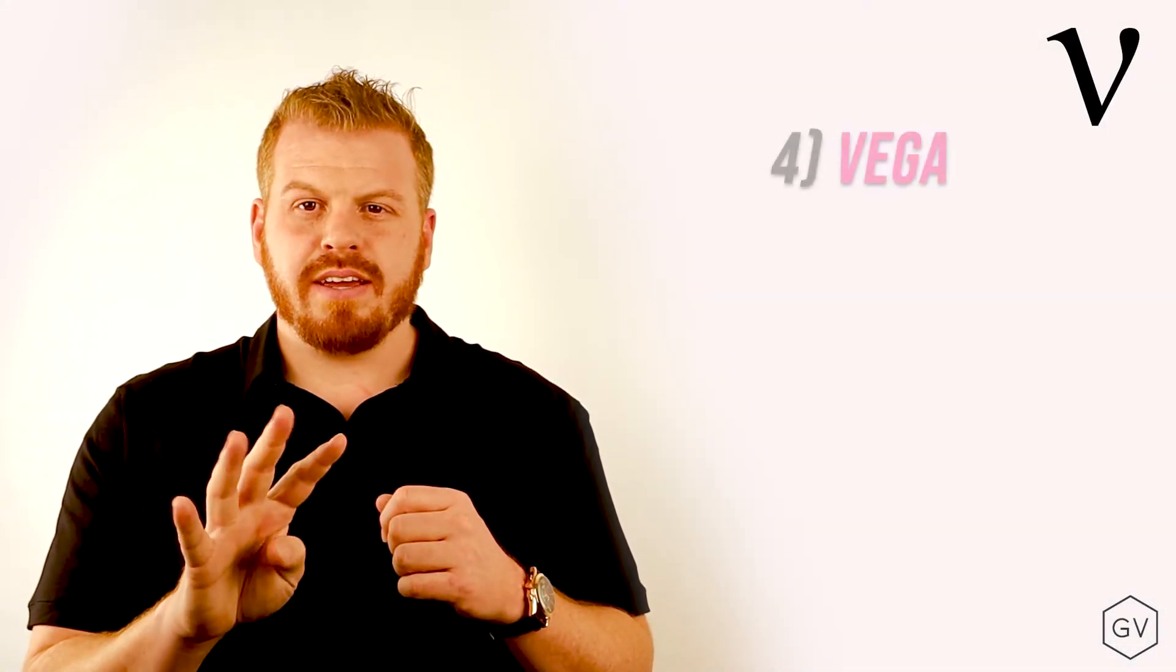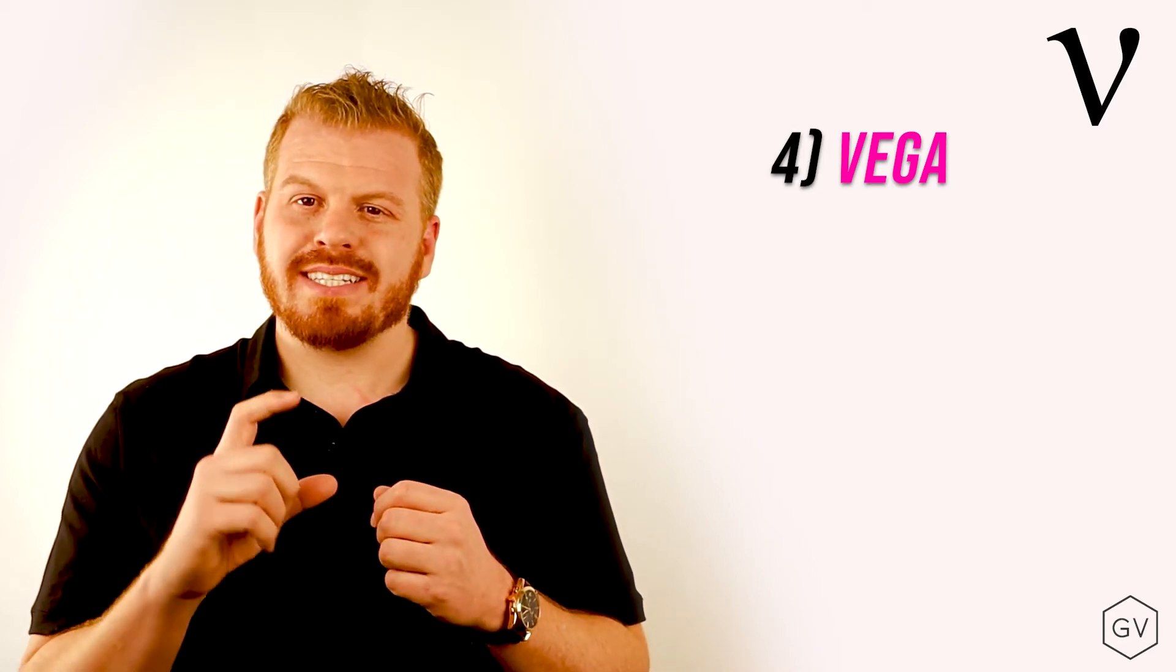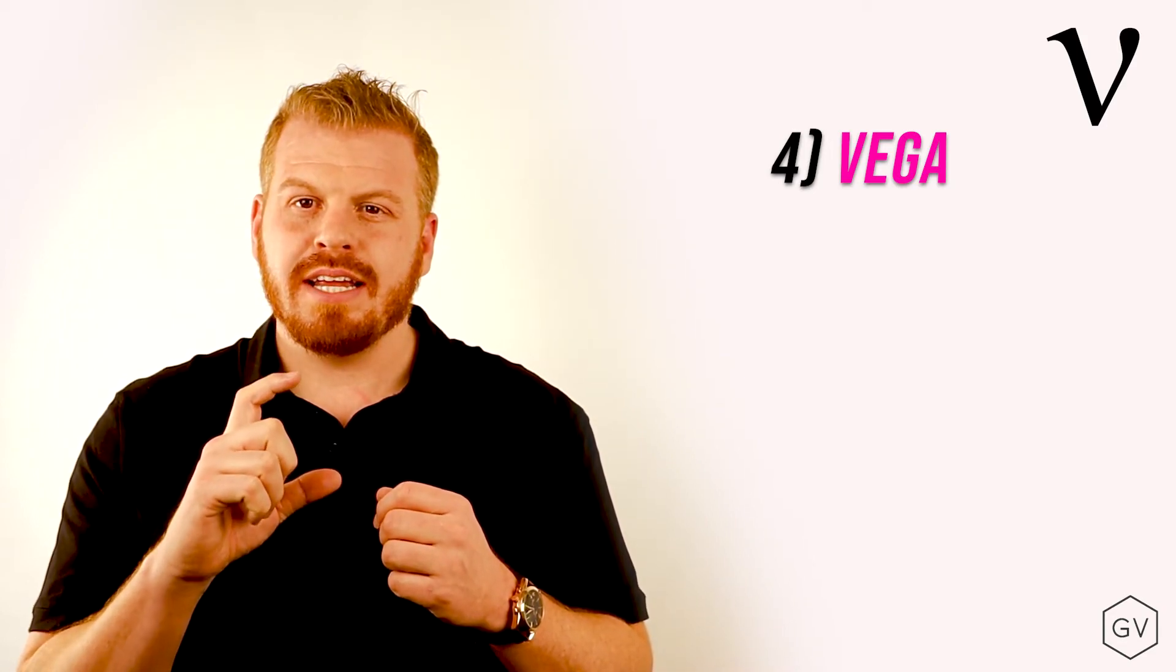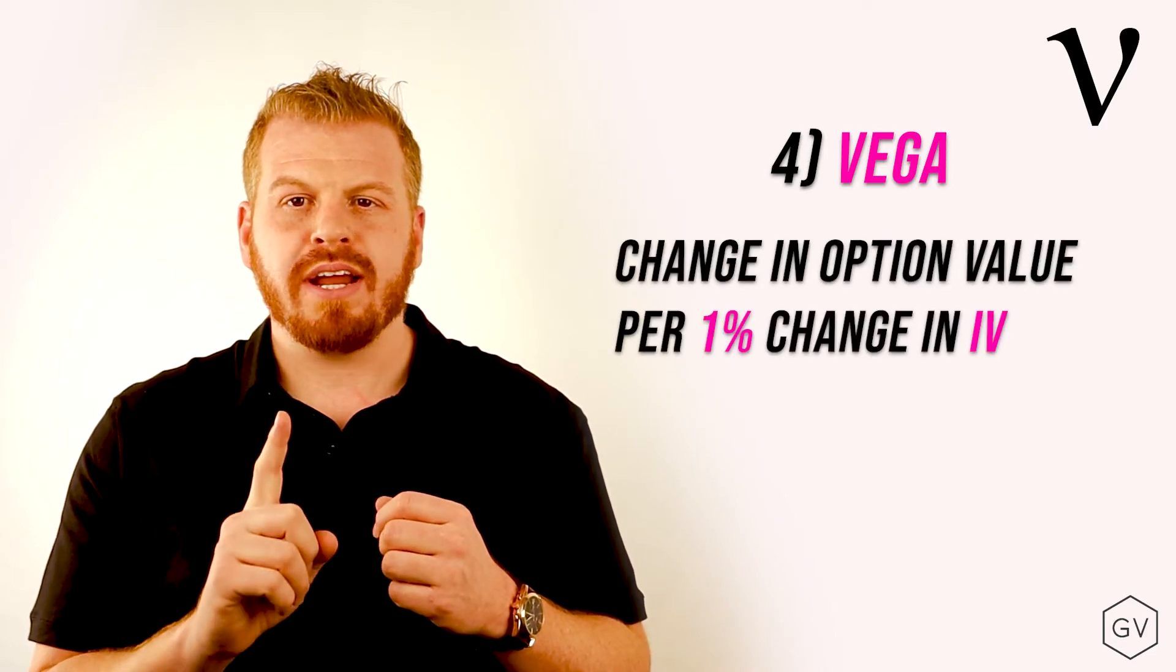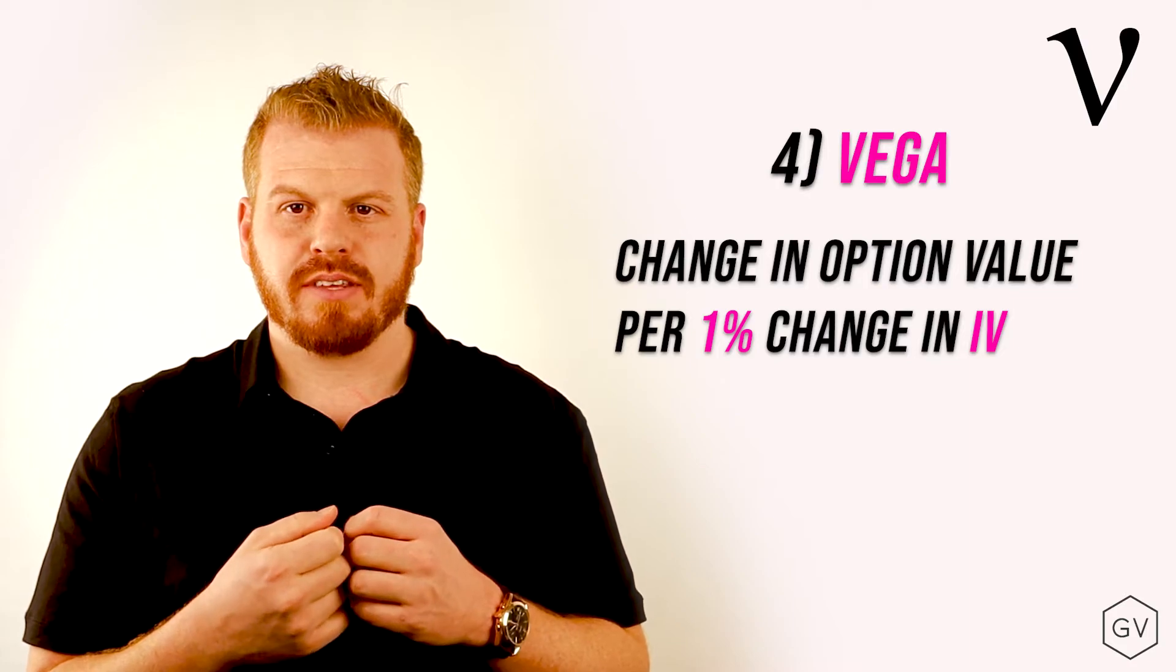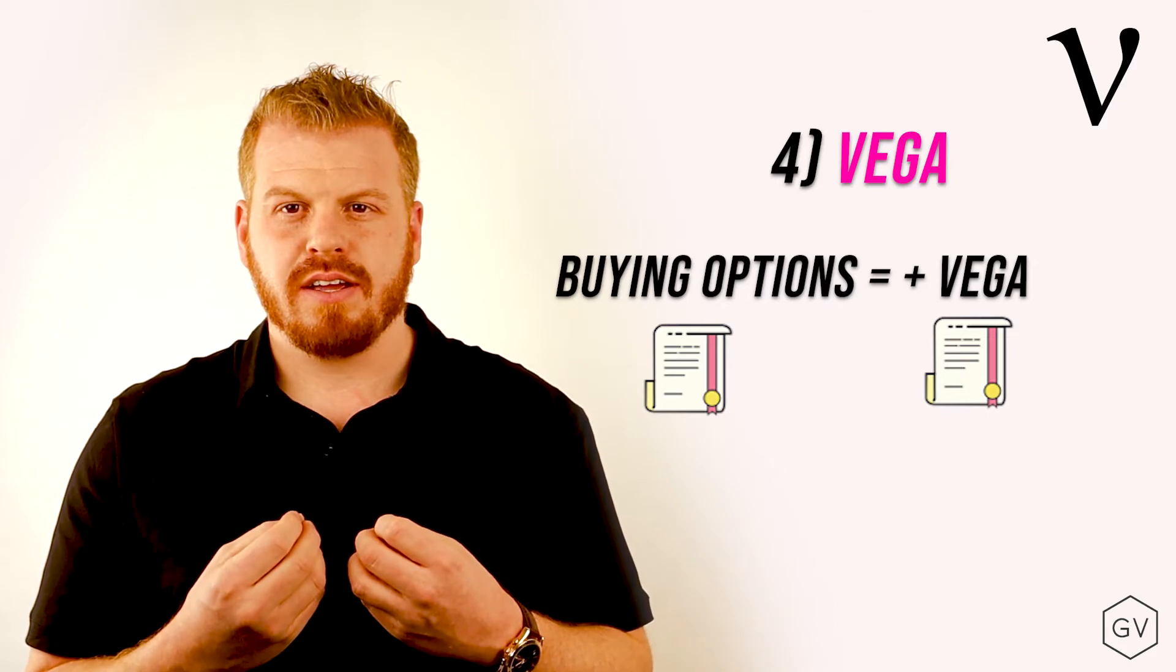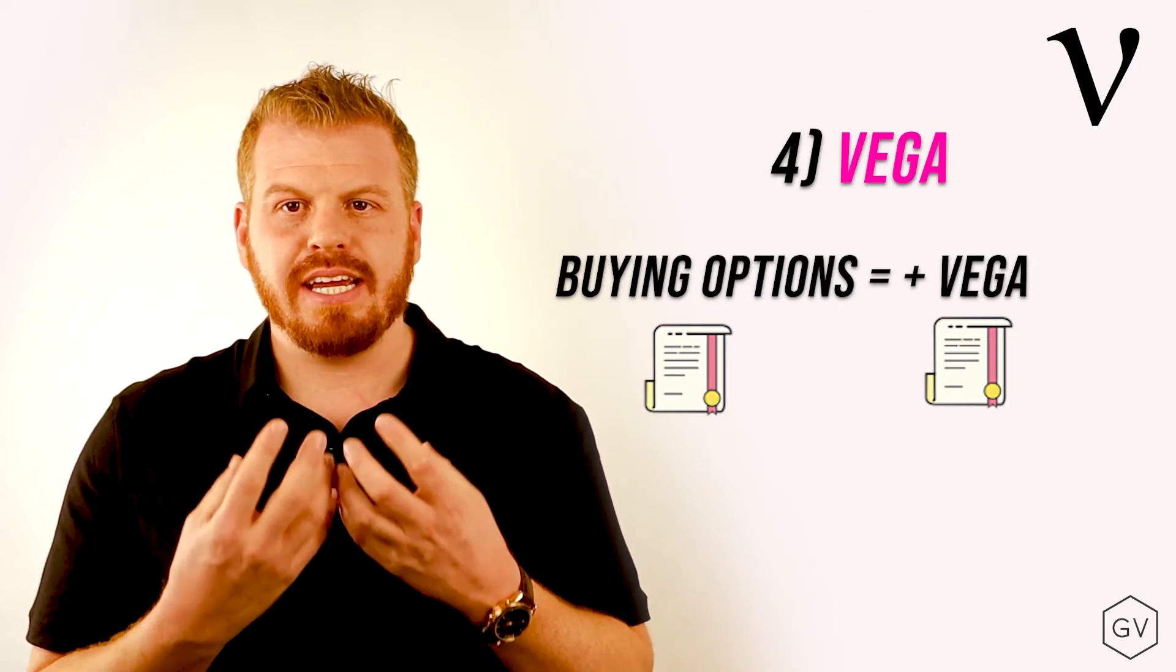The fourth Greek, and in many ways the most important one, is called vega. Vega represents the translation in dollar terms of a one point increase or decrease in implied volatility. When you buy options, you are long vega. You are buying volatility. And you hope that implied volatility decreases.